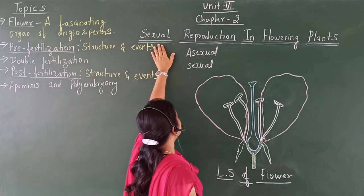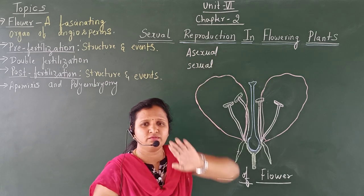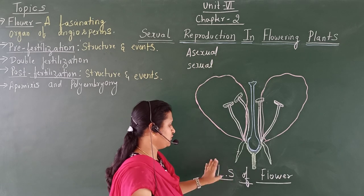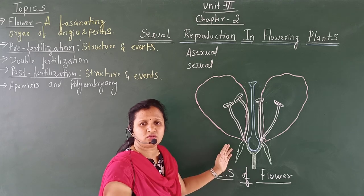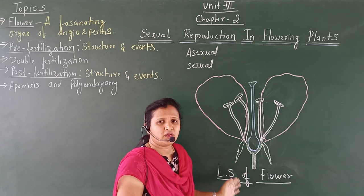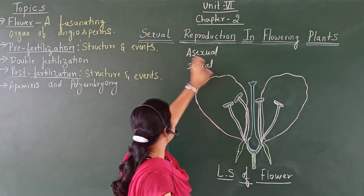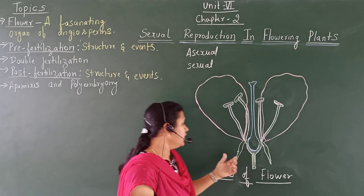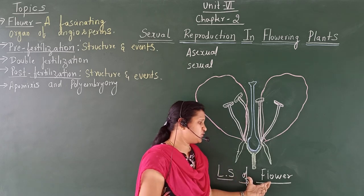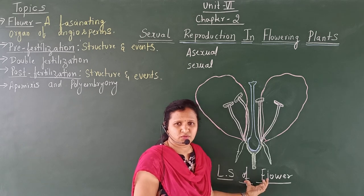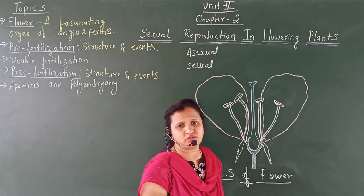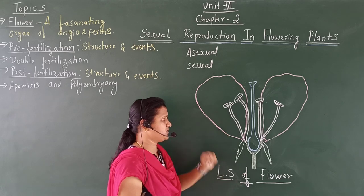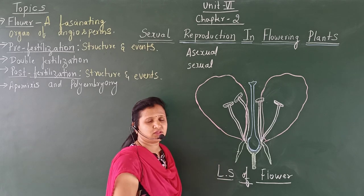Before going into detail on sexual reproduction, we should basically know the parts of the flower, because without knowing the parts of the flower, you cannot proceed with sexual reproduction. We have already studied the parts of the flower in your first year, but let us recall it once again. There are basically four parts present in the flower.